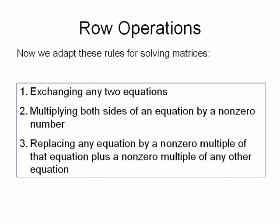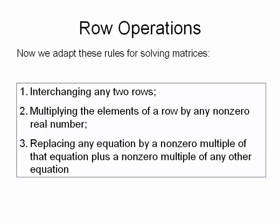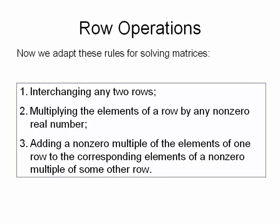Now we're going to adapt these to work with matrices. We can interchange any two rows of the matrix. We can multiply the elements of a row by any non-zero real number. And we can add a non-zero multiple of the elements of one row to the corresponding elements of a non-zero multiple of some other row.